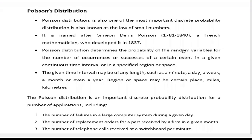Welcome everybody. Today we have to discuss about Poisson distribution. Poisson distribution is one of the most important discrete probability distributions, also known as the law of large numbers. It is named after French mathematician Simon Denis Poisson, who developed it in 1837.